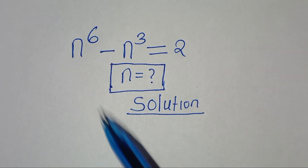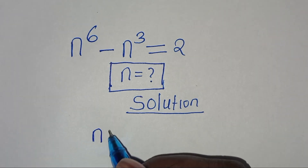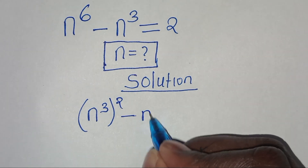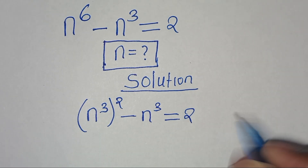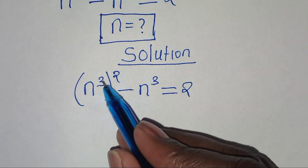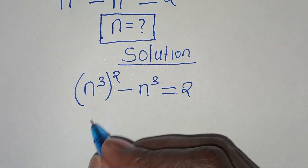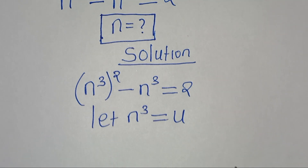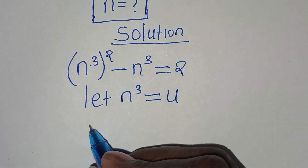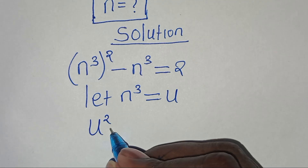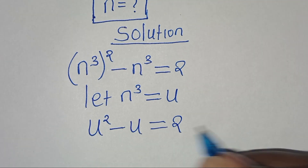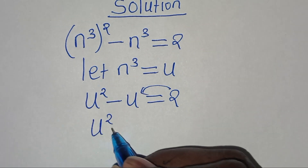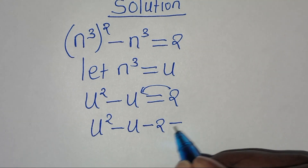Now we can express n to the power of 6 as n to the power of 3 raised to the power of 2, minus n to the power of 3, and this is equal to 2. So we have n to the power of 3 appearing twice, so we can let n to the power of 3 be equal to u. Substituting u, we have u squared minus u equals 2, so u squared minus u minus 2 equals 0.